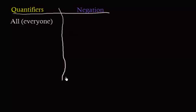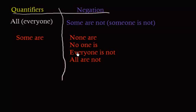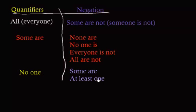To summarize: our first basic quantifier is all, and the negation is some are not, or someone is not. Our second quantifier is some are, or someone is, and the negation is none are, no one is, everyone is not, or all are not. Our third quantifier is no one, or none, and the negation is some are, or at least one.